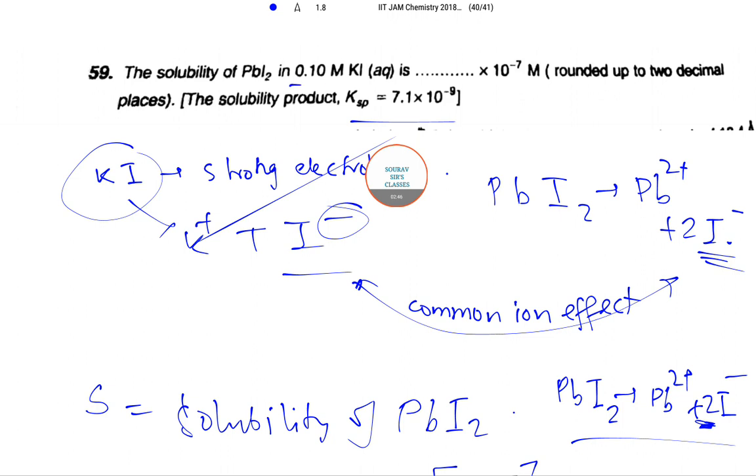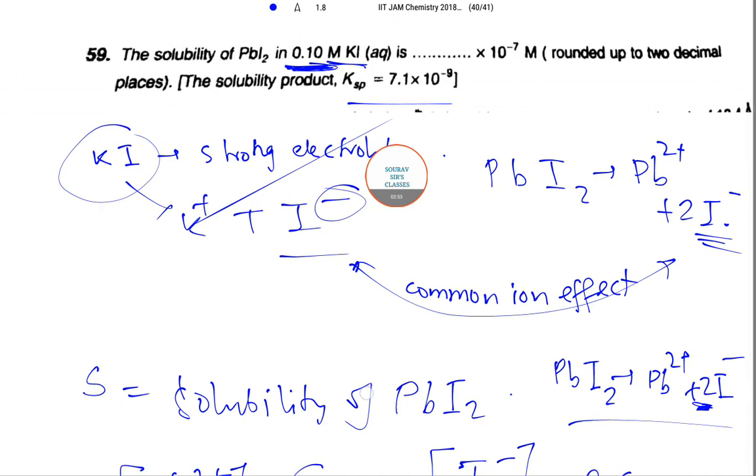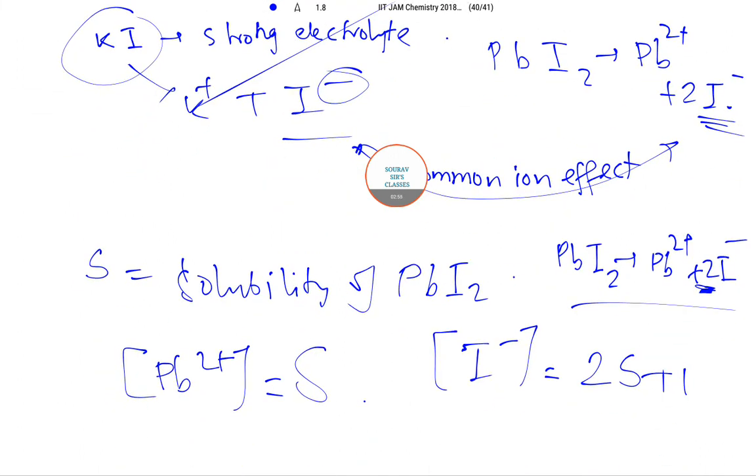Here we see that 0.10 molar is the solution of KI, so in the solution I- will be present, and the concentration of I- in the solution will be 0.10 due to KI and 2S due to PbI2.